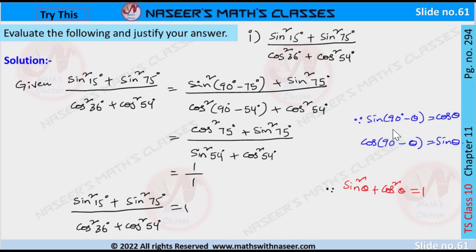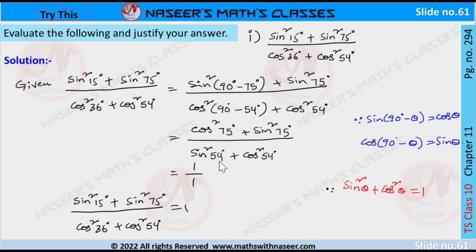By using the complementary angle identities — sin(90° − θ) = cos θ and cos(90° − θ) = sin θ — we write sin square(90° − 75°) as cos square 75 degrees, and cos(90° − 54°) as sin square 54 degrees. The numerator is then in the form of the identity sin²θ + cos²θ = 1, and the denominator is also in the form sin²θ + cos²θ = 1.